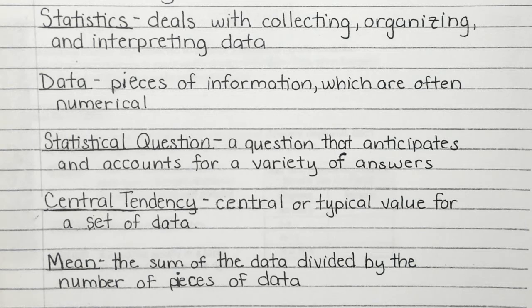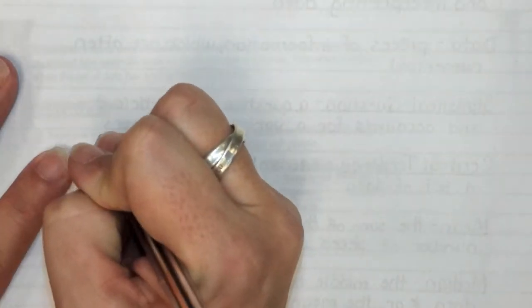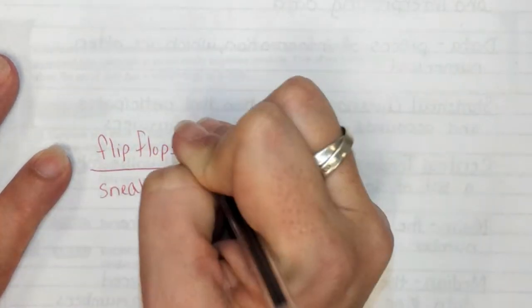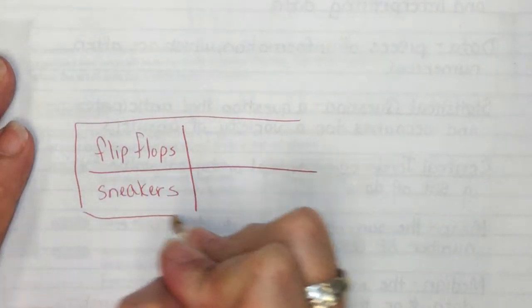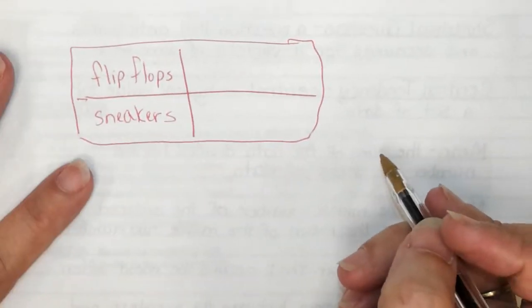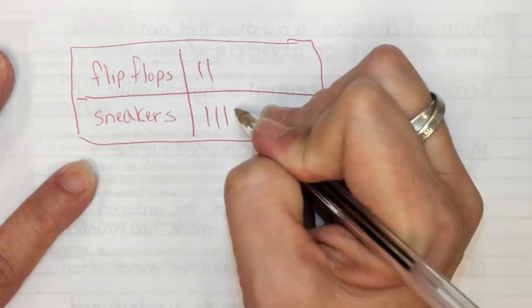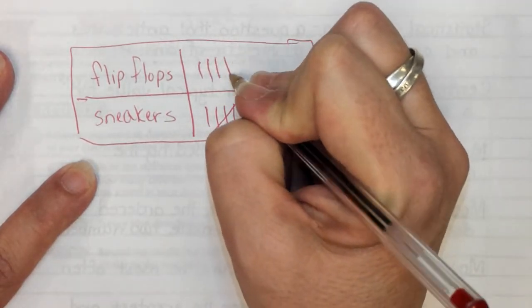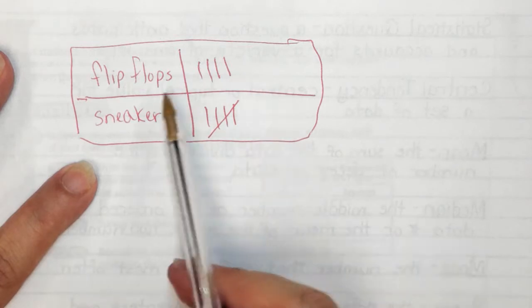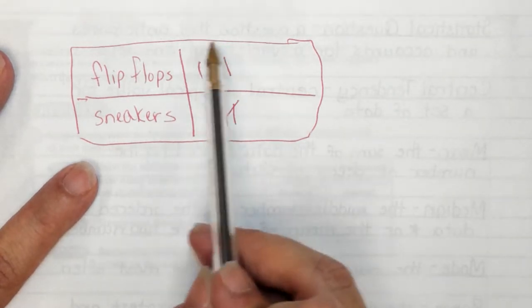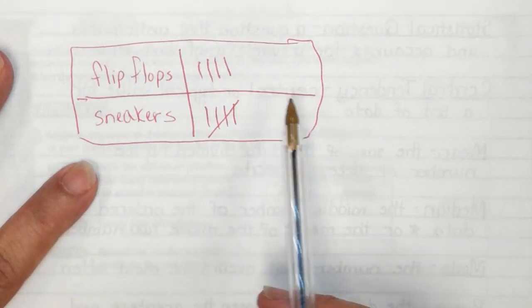There are two different ways to collect data. For example, if I change the question to asking every kid in my class 'do you like flip-flops or sneakers,' one kid says flip-flops, another says flip-flops, another says sneakers, and so on. Eventually you are collecting data and you have created a statistical question because it leads to more than one answer. This would be easy to record with tally marks since there are just two possible answers.